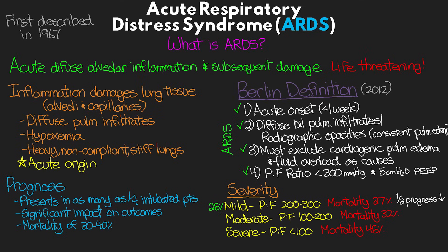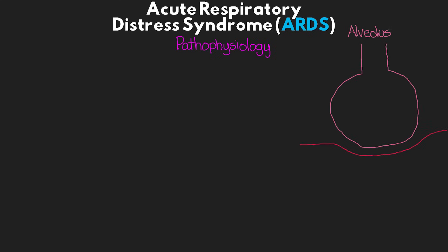To understand ARDS management, you need to understand the underlying pathophysiology. Starting with normal anatomy: the alveolus has two types of cells called pneumocytes. Type 1 pneumocytes form most of the epithelial surface of the alveoli and make up almost half of the membrane across which oxygen and CO2 must diffuse for gas exchange to take place at the capillary.